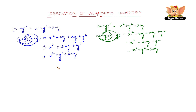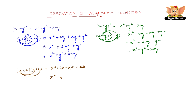Now let us look into another one, which is x plus a into x plus b. So x plus a into x plus b equals x square plus a plus b into x plus ab. Let us see how we get this. x into x is x square, x into b is bx, and a into x is plus ax, and a into b is plus ab.